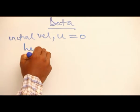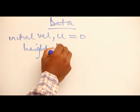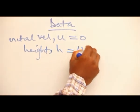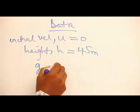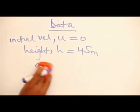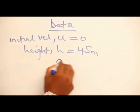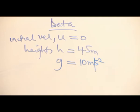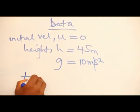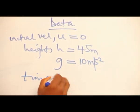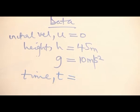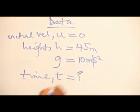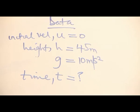We are given the height h = 45 meters and the acceleration due to gravity g = 10 meters per second squared. We are asked to find the time taken by the object to reach the ground.